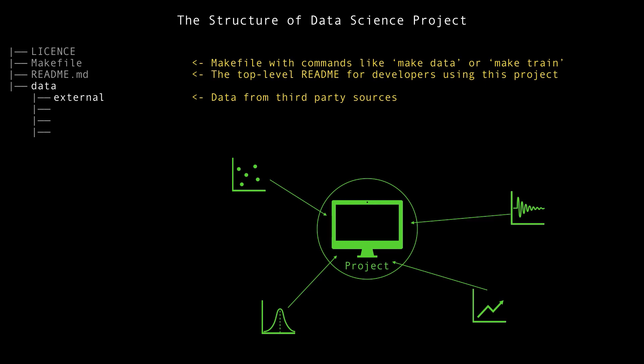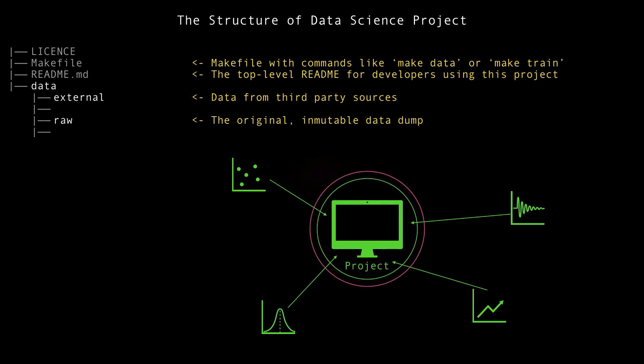The next important directory in data is raw data — the original and immutable data dump. Looking at the schema, let's draw a magenta circle outside the green one — this is the raw data. When we get a data stream from third-party sources, all the data before the data preprocessing part is raw data, because it is coming into the project environment in its original form and original structure before any transformation.